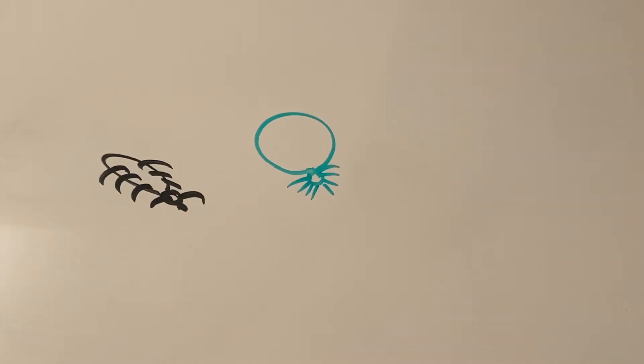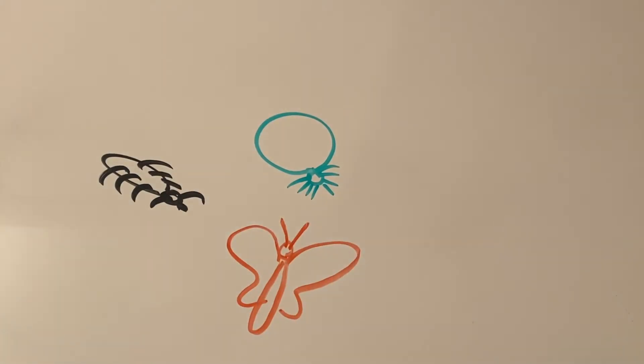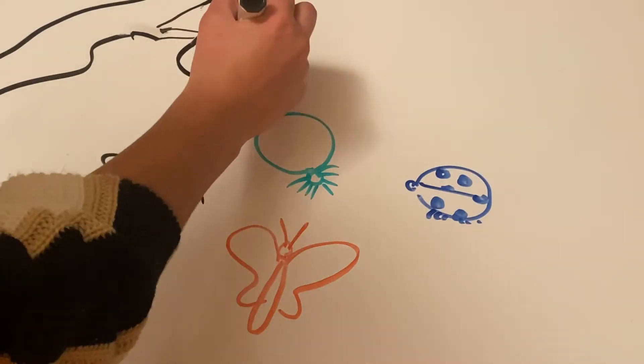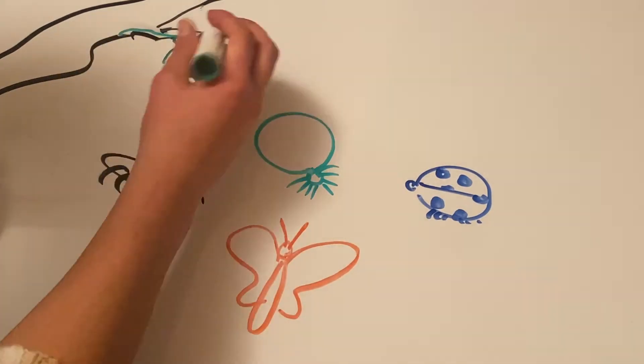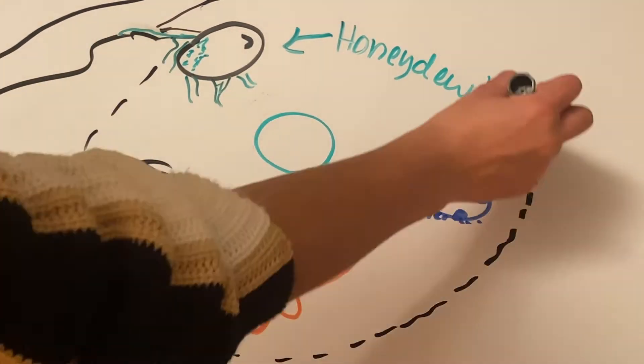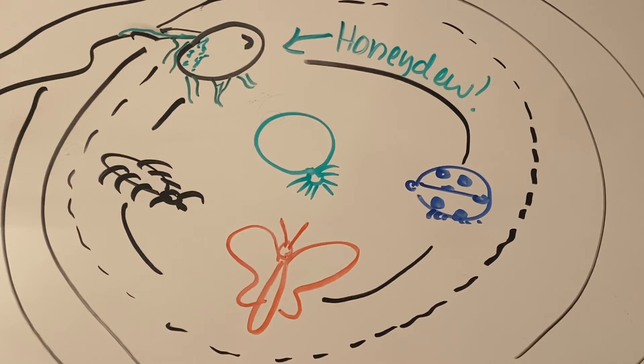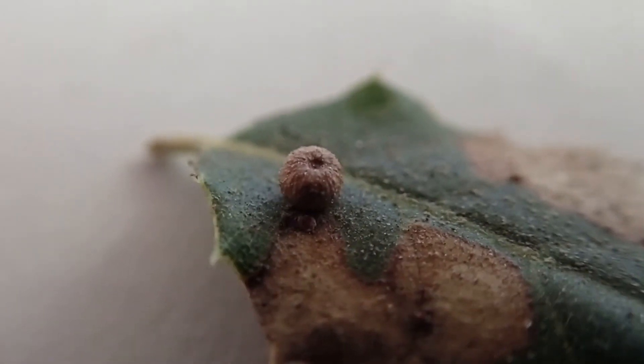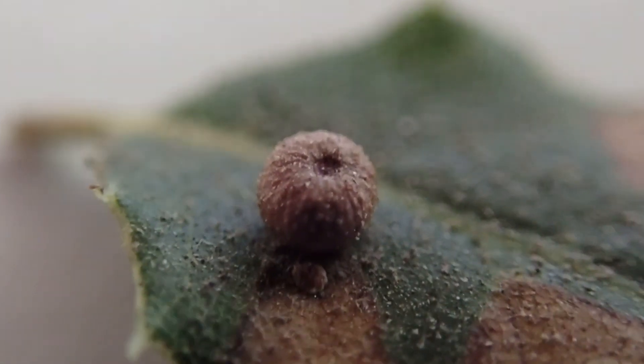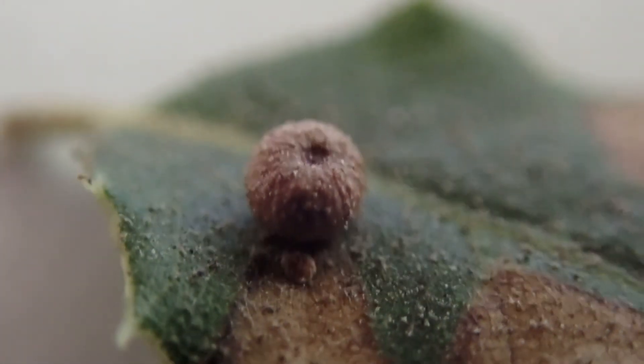But as Rachel Carson once wrote, in nature, nothing exists alone. So how do galls interact with their environment? Believe it or not, galls are even allies to species like ants, spiders, moths, and beetles. They attract and feed these organisms by producing honeydew. Once the ants and spiders have arrived, they fend off other predators that may try to parasitize the gall, protecting not only the gall but the tree from predators. Galls are both parasitic and mutualistic with the trees and these other organisms.